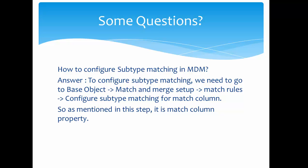Subtype matching is a match column property, similar to segment matching. That means if you do not configure a match column in the match and merge setup, then such columns cannot be used for subtype matching. For example, if you created address type as a match column but have not created address line one or address line two as a match column, then you are not able to define address line one and address line two as a subtype match column.